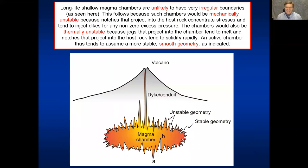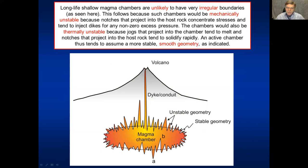If the magma chamber is long-lasting — tens of thousands or hundreds of thousands of years — it cannot maintain a highly irregular boundary. The parts of the chamber that project into the host rock become solidified quickly, and the parts that project into the magma melt quickly, so gradually the chamber acquires a smooth boundary. When we talk about the general shapes of magma chambers we refer to chambers with relatively smooth geometries, because highly irregular geometries are mechanically and thermally unstable.